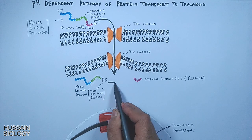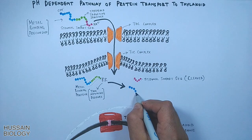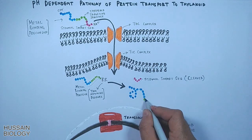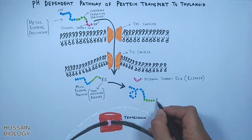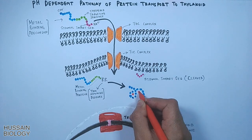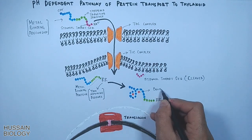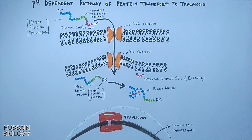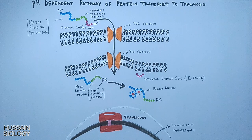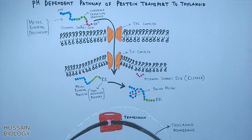In the next step, cofactors in the form of metal ions are added to the metal binding protein, as shown in the diagram. It must be noted that the metal binding precursor protein folds in the stroma to accommodate the metal ions in its structure.